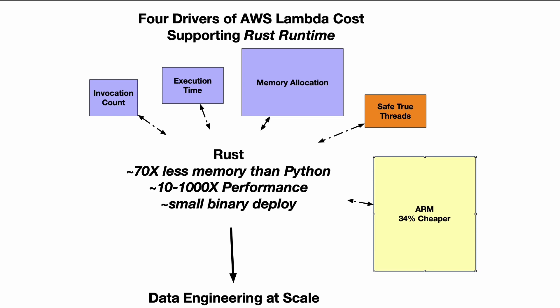There are four drivers of AWS Lambda cost that support using the Rust runtime. The less you use it, the less you'll be charged — like invocation count. Also execution time: this is where Rust's computational performance is amazing, because you're going to benefit from that 10 to 1000 times performance benefit. Then memory allocation, because Lambda charges you by memory — Rust can use up to 70 times less memory on an average scenario. Also concurrency, because you can use safe true threads.